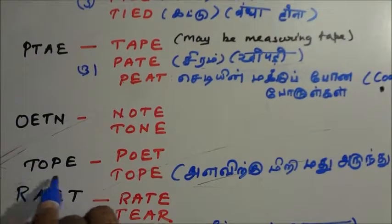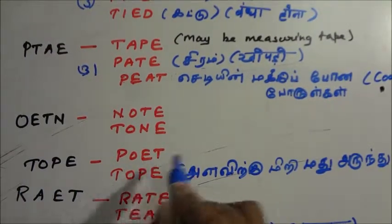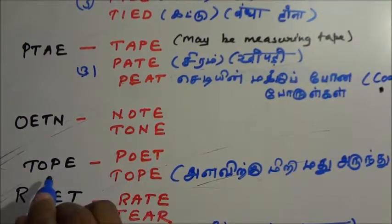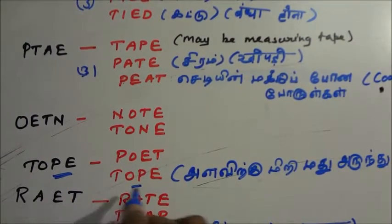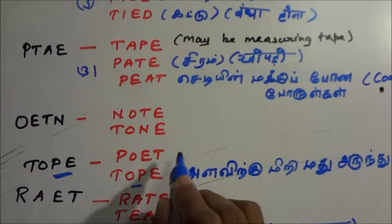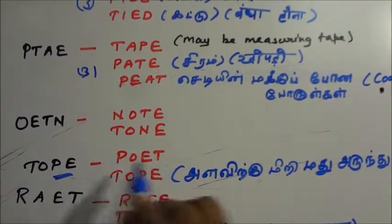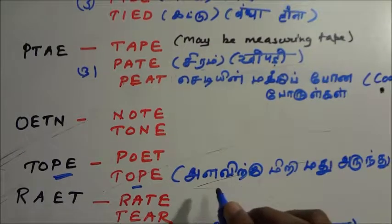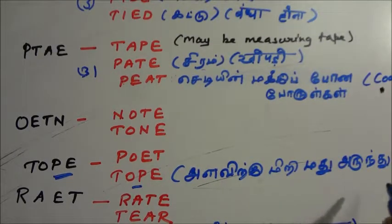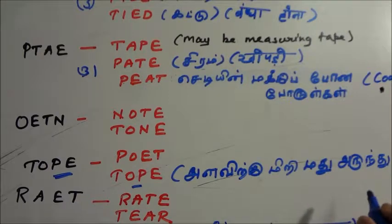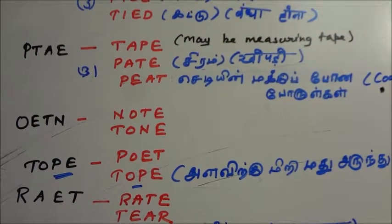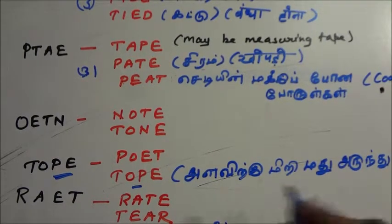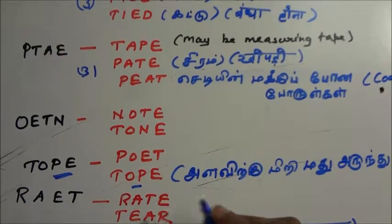T-O-P-E - from this word we can form POET and TOPE. The same letters can be rearranged. P-O-E-T is a poet who writes poems. T-O-P-E in Tamil means someone who drinks excessively.